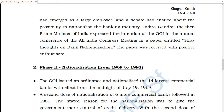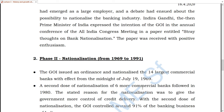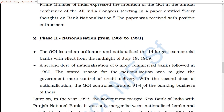In the second phase, in the year 1969, the government nationalized 14 major commercial banks in July 1969. Then in 1980, six more banks were nationalized.